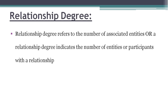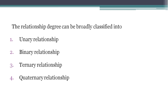Next topic: Relationship Degree. A relationship is usually the association between two entities. Relationship degree indicates the number of entities or participants in a relationship. The relationship degree can be broadly classified into unary, binary, ternary, and quaternary.